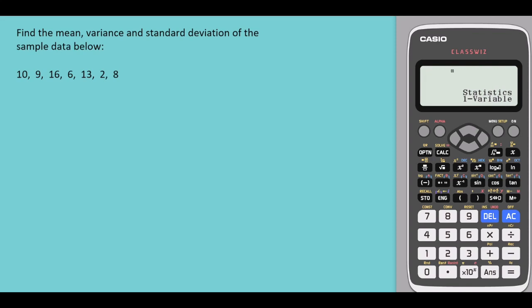Let's use the Casio FX570 or 991EX ClassWiz calculator to find the mean, variance and standard deviation of the sample data.